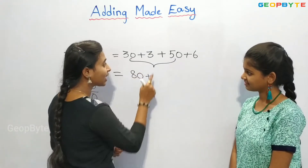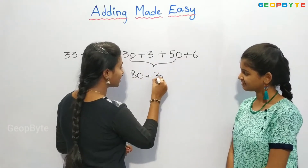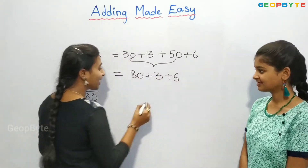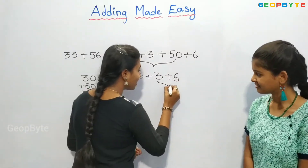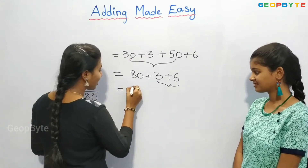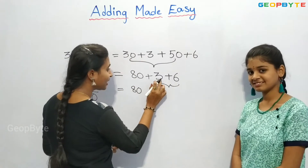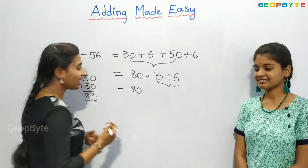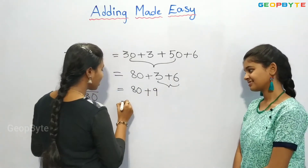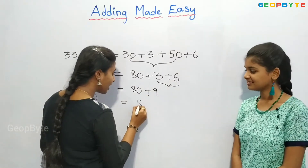Let us write the units as they are. Now let us add these two numbers. Let 80 be as it is. 3 plus 6 is 9 — let us write plus 9. So 80 plus 9 is 89.